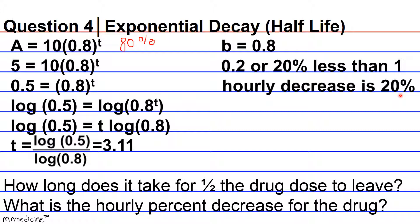All right, so these are our two answers. We have 3.11 for the amount of hours it takes for half the drug to leave, and the 20% hourly decrease of the drug. Which kind of makes sense. Yeah, this adds up about right. All right, so thanks for tuning in, and good luck studying!